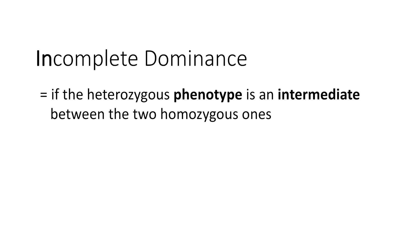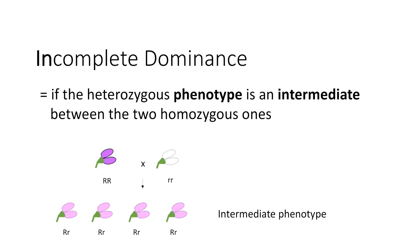We will talk about incomplete dominance now. Incomplete dominance is when a heterozygous phenotype is an intermediate between the two homozygous ones. We see here the purple flower and the white flower, which are both true breeds, crossed with each other. The intermediate phenotype is a mixture between the purple and the white allele. If we have incomplete dominance, we can consider it a non-Mendelian trait.